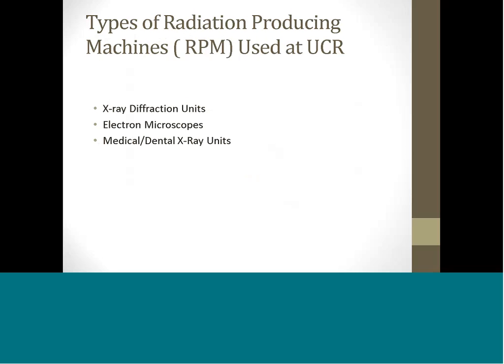The University of California, Riverside has different types of radiation producing machines under its registration, which includes the following: X-ray diffraction units, electron microscopes, and medical and dental X-ray units.